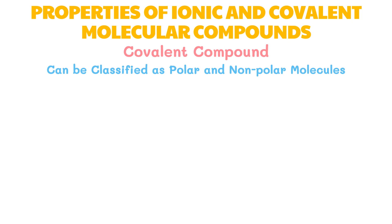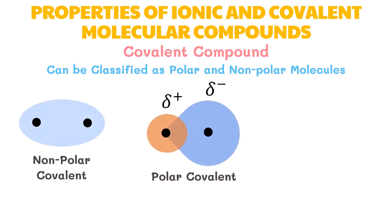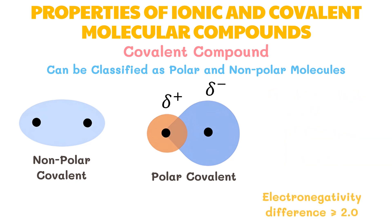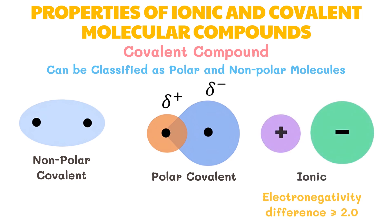To determine if a bond is polar or nonpolar, one must consider the electronegativity difference between the bonded atoms — the greater the difference, the more polar the bond. If the difference in electronegativity is greater than or equal to 2.0, the electrons are completely transferred instead of being shared, and an ionic bond results rather than a covalent bond.